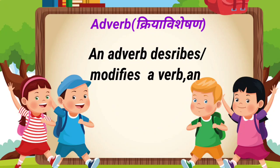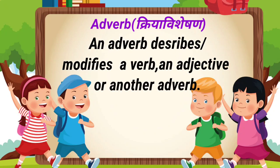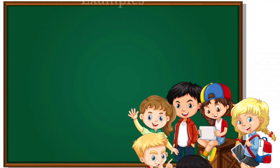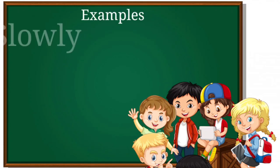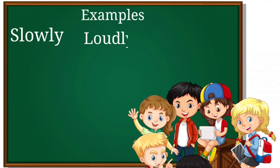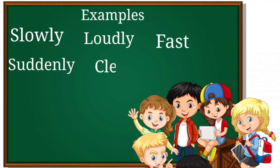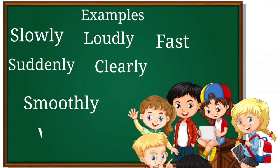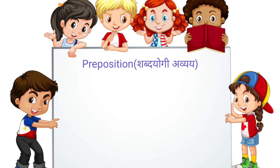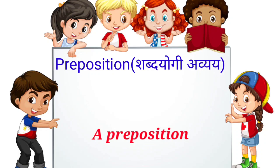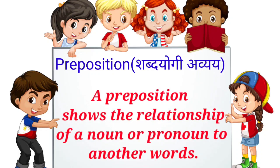The next part of speech is adverb — 'kriyavisheshan.' An adverb describes or modifies a verb, an adjective, or another adverb in a sentence. Examples are: slowly, loudly, fast, suddenly, clearly, smoothly, and very.